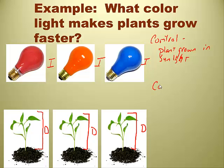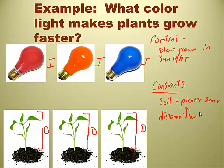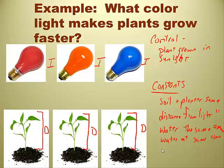What sorts of constants would we want to use in this experiment? Keep the amount of dirt and the size of the planter equivalent. The distance from the lights should be the same. If you watered one plant more than another, it would grow faster, so keep the watering amount the same. Water at the same time as well. Probably want to measure the plants at the same time too. Also consider time of exposure to light — it wouldn't be fair if the red light was exposed longer than the blue.